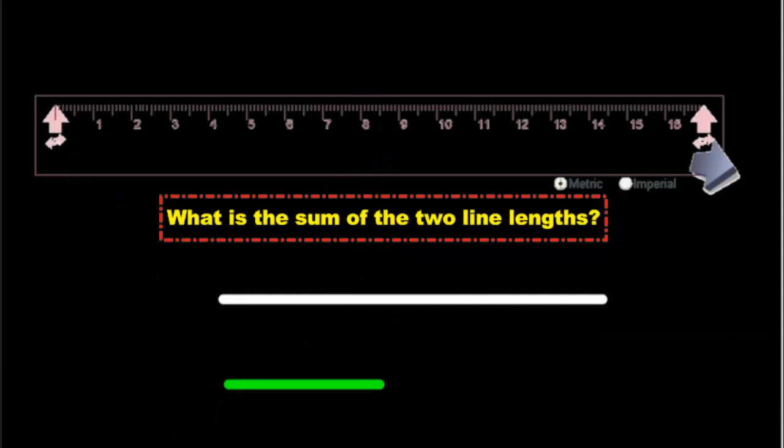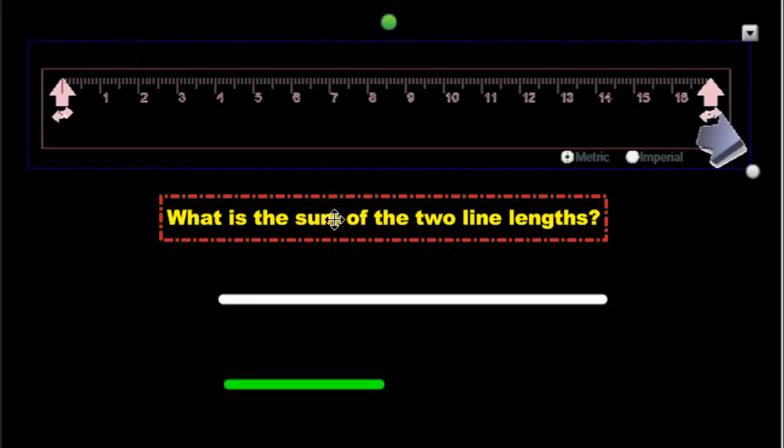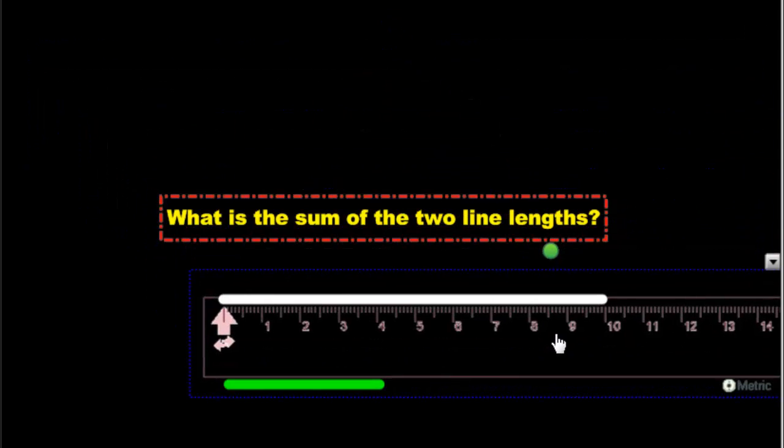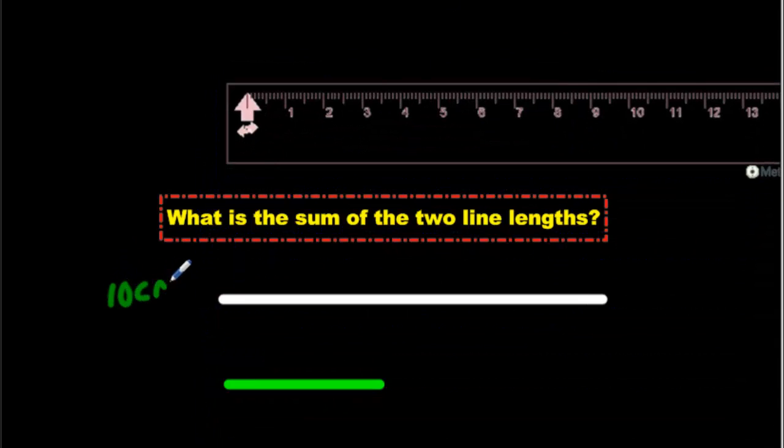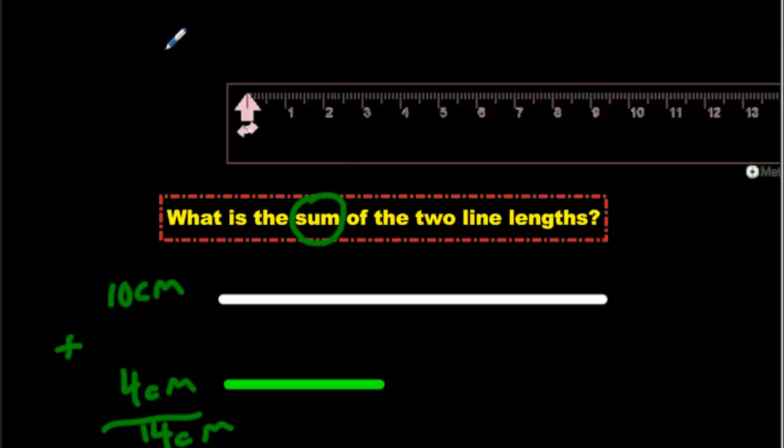How about this one here? A little more challenging. It asks us to find the sum of the two line lengths. So to start, we need to find the line lengths. And this one is still 10. This one is still 4. We're going to get 10 centimeters for this one. We're going to get 4 centimeters for this one. And because it's asking us to find the sum, we know what that means. It means add. And 10 plus 4 is 14. So the sum of the two lines is going to be 14 centimeters.